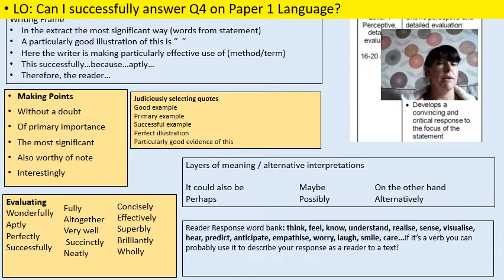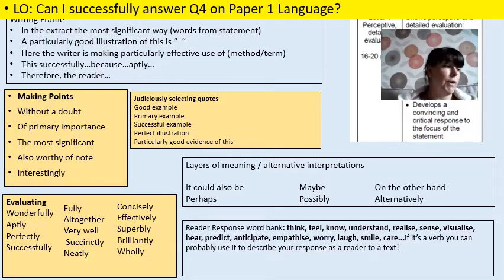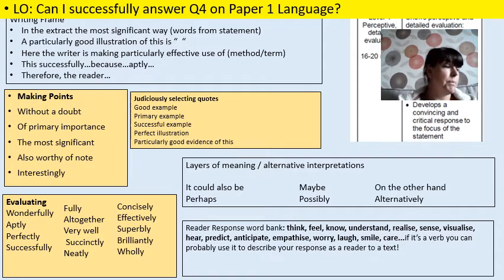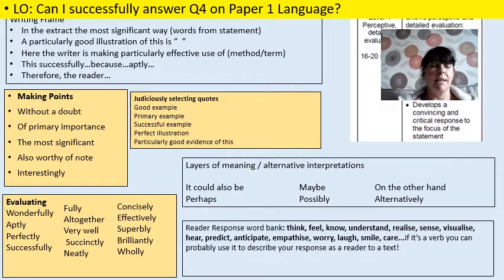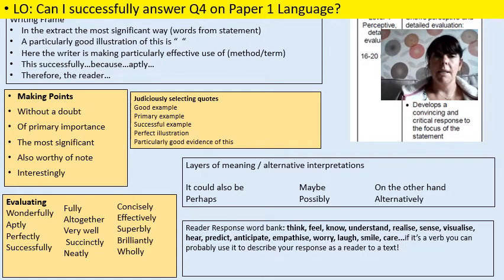You can do a similar thing with your evidence when you're introducing your quotes: a good example, a primary example, a perfect illustration, a particularly good example of this. Again, it's the language of evaluation — it suggests that you had lots to choose from but you understood that one was the most significant. Mainly it's going to come through in your explanations of effect, though, just by making sure you've got a good range of adverbs at your fingertips: wonderfully, aptly, perfectly, neatly, brilliantly, concisely. Don't use too many of these, but by sprinkling them in your answer it gives the impression that you have very carefully considered and evaluated the effect on the reader.